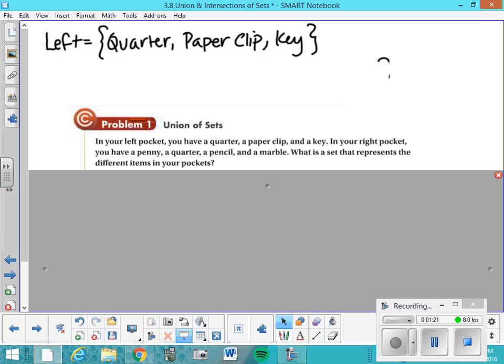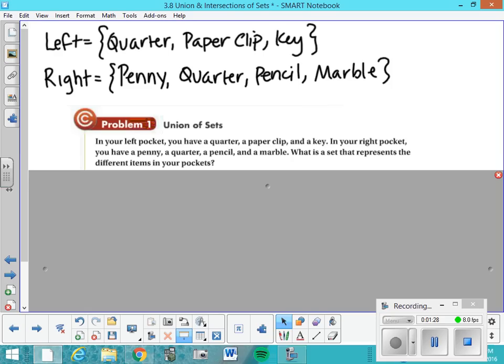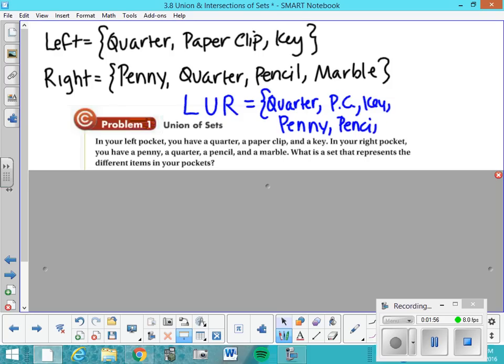So that should look like this. In your left pocket, you have a quarter, a paper clip, and a key. And in your right pocket, you have those things. If we are going to write the union of your left pocket and your right pocket, we would say it's the set of all things: a quarter, because that's in both, a paper clip, I'm going to abbreviate just to save time, a key, a penny. We already said quarter, we're not going to say it again. A pencil and a marble.